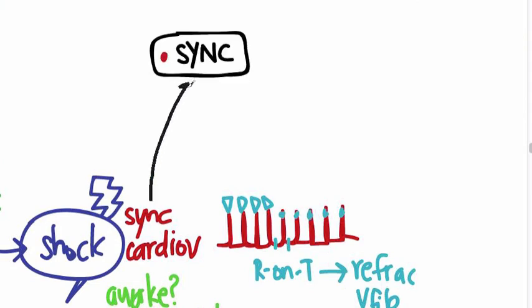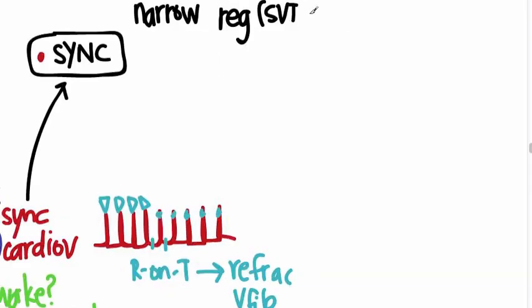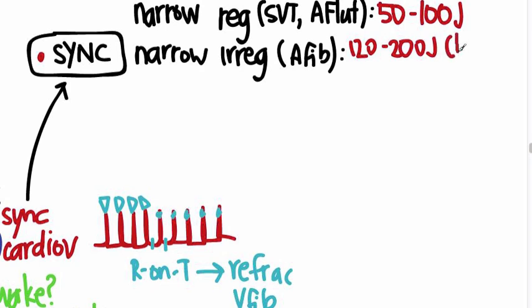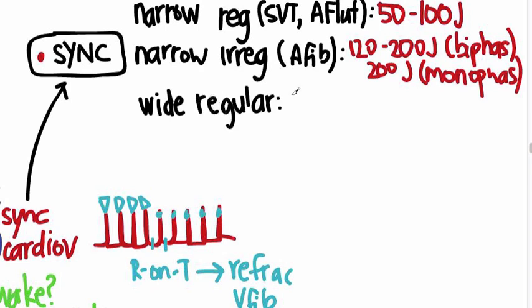And remember I told you that there's a button that you press on the monitor that sets it up into sync mode, and when it's pressed, a little red light will start up on it. So if you have a narrow and regular rhythm like SVT or A-flutter, you can get away with 50 to 100 joules. Now if it's narrow and irregular, this would be about 120 to 200 joules if it's biphasic—if you have a biphasic defibrillator, we talked about that earlier—or 200 joules if you have a monophasic one.